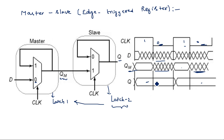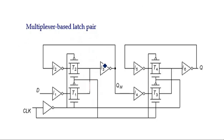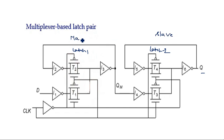The same master-slave edge-triggered register can be implemented using CMOS logic circuitry. The first latch and second latch are built as discussed previously, with latch one's output connected to latch two's input — one acting as master and the other as slave. Ultimately, all MUX-based latches and registers are designed using CMOS transistors.